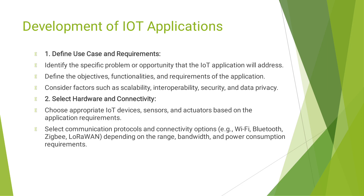The second one is select hardware and connectivity. Choose appropriate IoT devices, sensors and actuators based on the application requirements. Select communication protocols and connectivity options — Wi-Fi, Bluetooth, ZigBee, etc. — depending on the range, bandwidth and power consumption requirements.